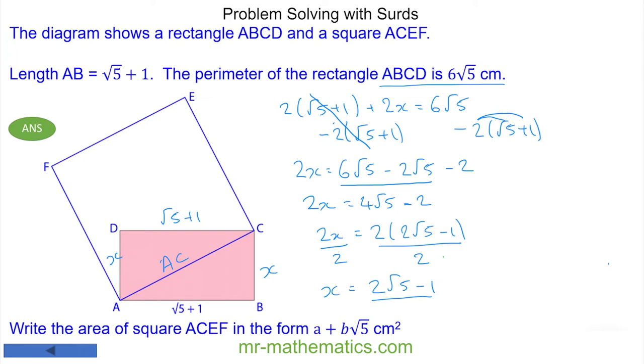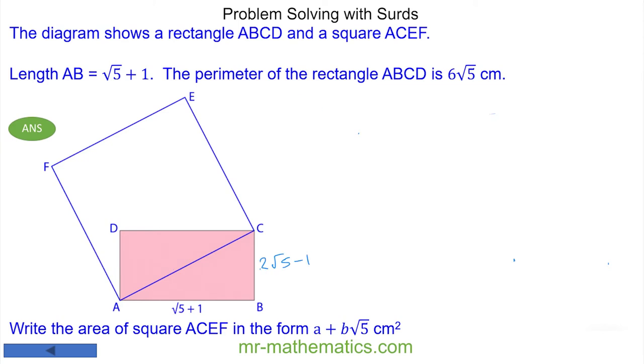And now I can use Pythagoras' theorem to work out the length of AC. Pythagoras' theorem tells us that AC² equals AB² + BC². So AC² will equal AB, which is (√5 + 1)², plus BC, which is (2√5 - 1)².